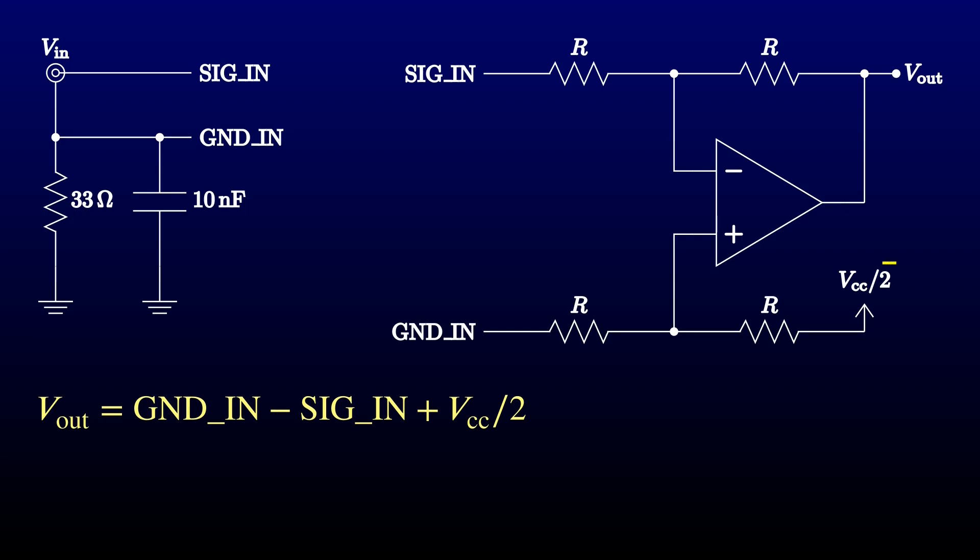Of course, having the reference input at half the supply voltage is awkward. We probably need a voltage divider to supply it, plus an op-amp follower to make sure that it's at a low impedance. But there's another easy trick.